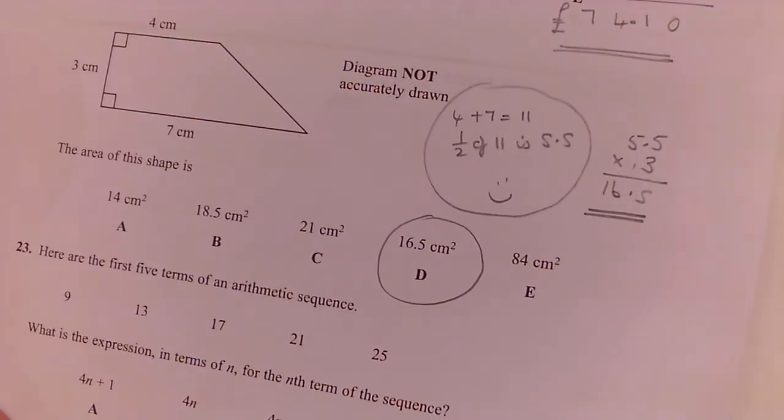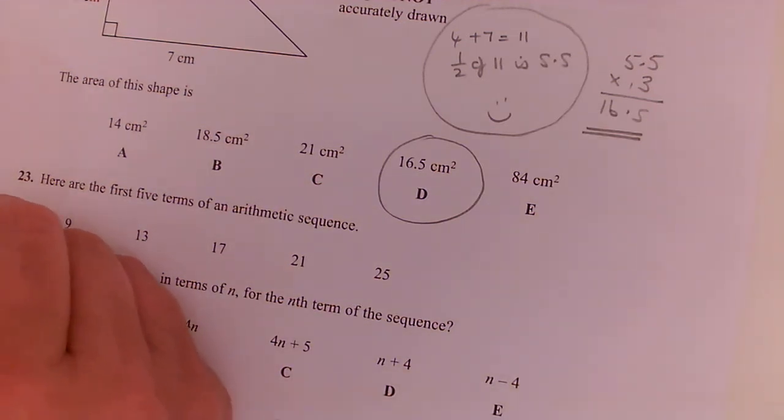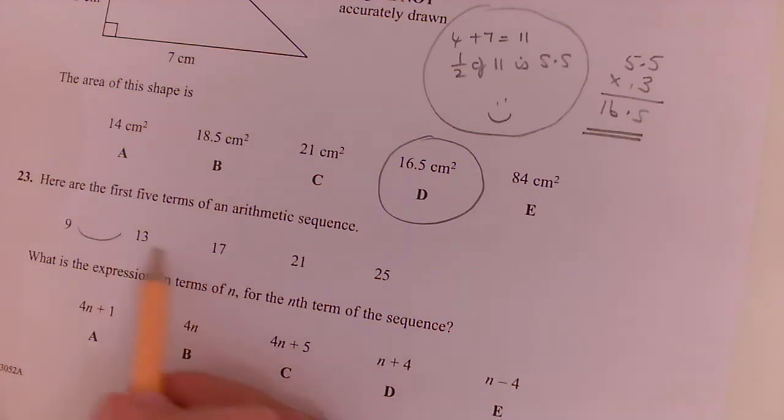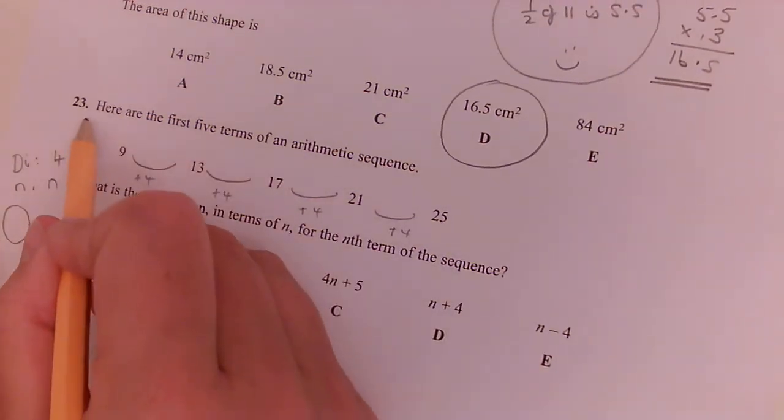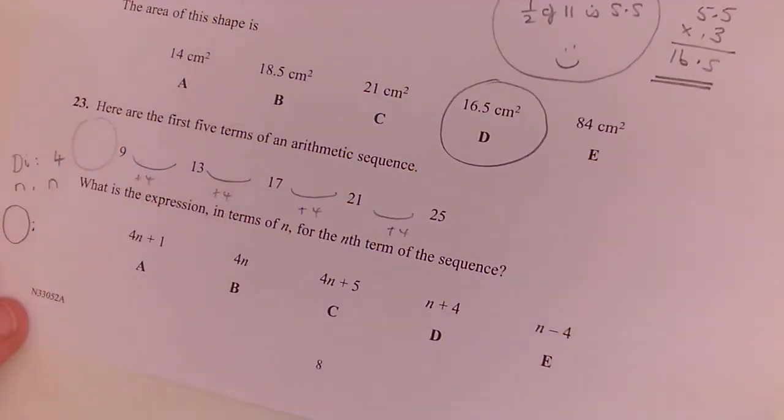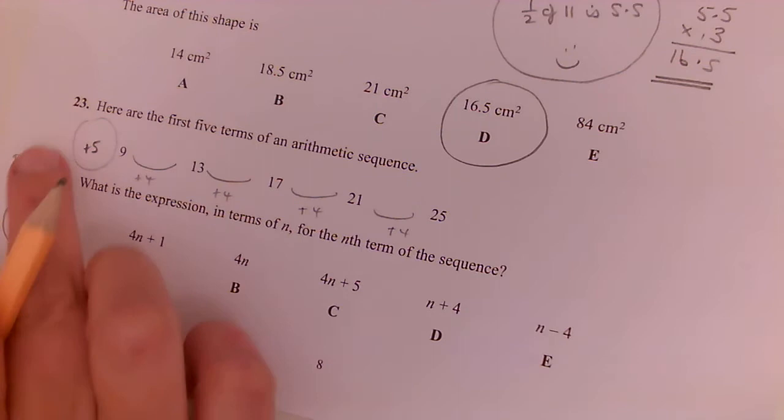Question 23. Here are the first 5 terms in an arithmetic sequence. What is the expression in terms of n for the nth term of the sequence? So we may remember that goes D-I-N-O. What is the difference? Well each time the difference is plus 4, so each time I'm adding on 4. So the difference is 4, n is always n, so the position number, and the 0 would be the number that comes before the 9. So if we took away 4, that would be positive 5. So the formula is 4n plus 5.